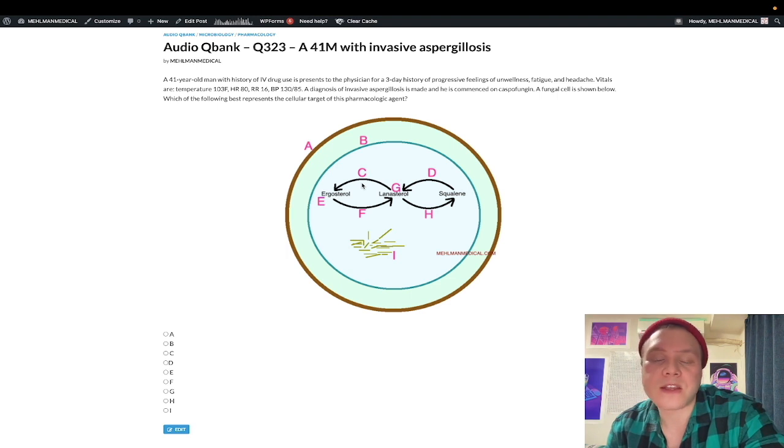Choice C refers to azoles, 14-demethylase, the conversion of lanosterol to ergosterol. Ergosterol is the fungal cell equivalent of cholesterol. USMLE will describe this enzyme, 14-demethylase, on the new NBMEs as a P450 methylation reaction or demethylation reaction. So that throws some students a curveball because they don't know that that refers to azoles.